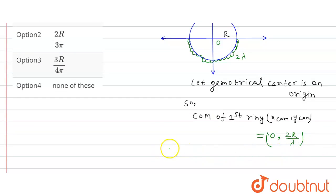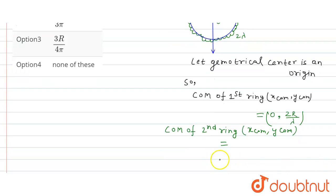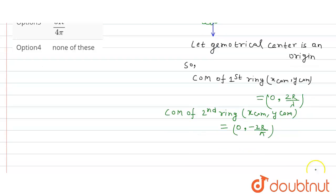Now, the center of mass of the second ring: x_cm = 0, and y_cm = −2R/π. So the center of mass of the second semi-circular ring is (0, −2R/π).